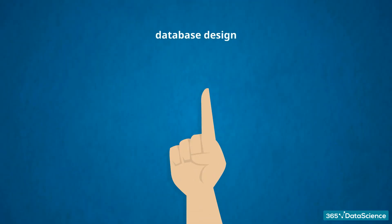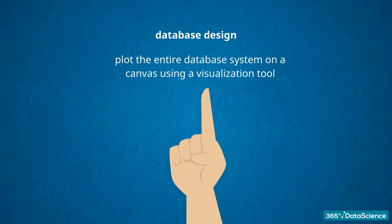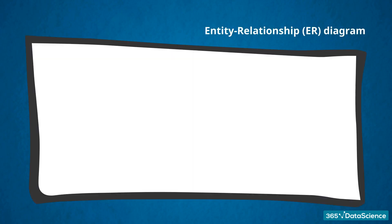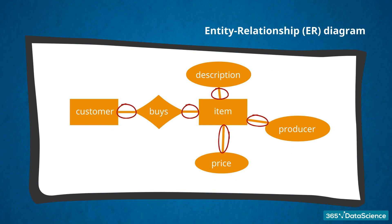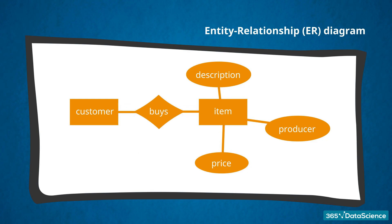What do database designers actually do? They plot the entire database system on a canvas using a visualization tool. There are two main ways to do that. One is drawing an entity relationship diagram — an ER diagram for short. It looks like this. As its name suggests, the different figures represent different data entities and the specific relationships between them. The connections between tables are indicated with lines. This way of representing databases is powerful and professional, but it is complicated. We will not focus in depth on ER diagrams in this course, but you should know they exist and refer to the process of database design.